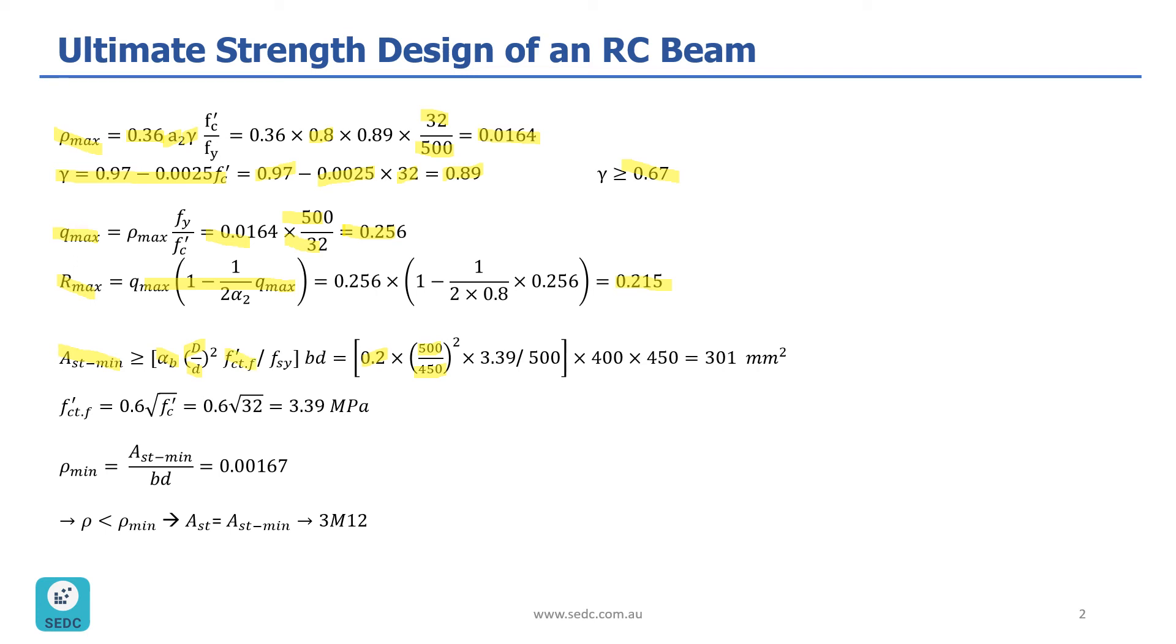F prime C, CTF, which is the formula shown here, was modulus of rupture. So, it's 0.6 times square root of 32, which is 3.39 MPa. We'll put this value into this formula. And then, Fy is 500, B is 400, and D is 450. So, AST min would be 301 square millimeter.